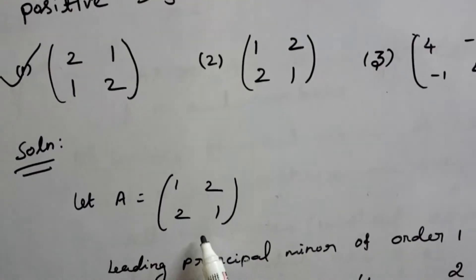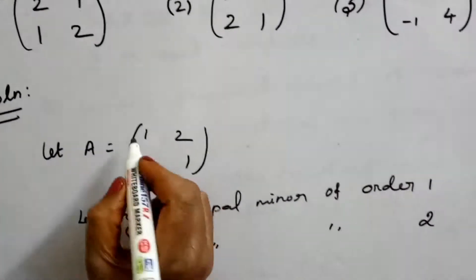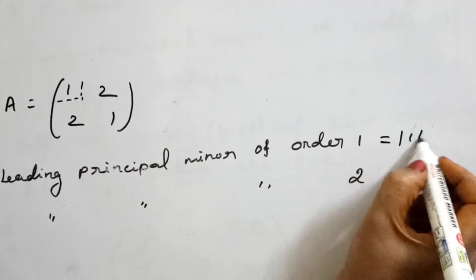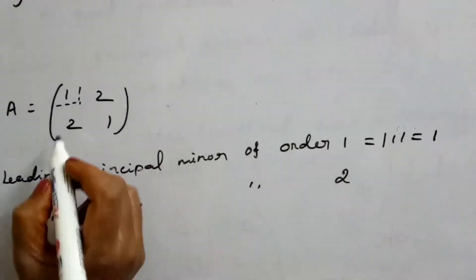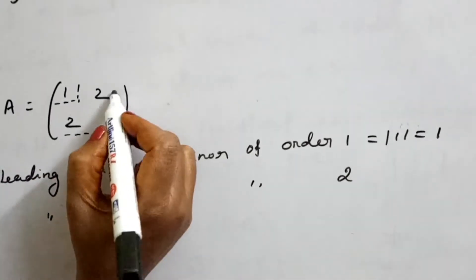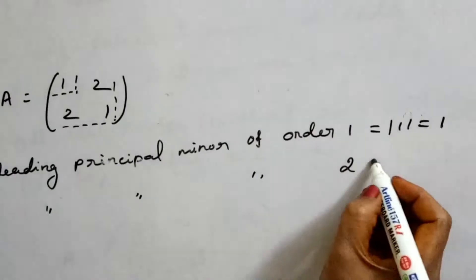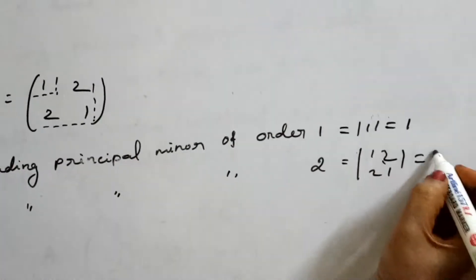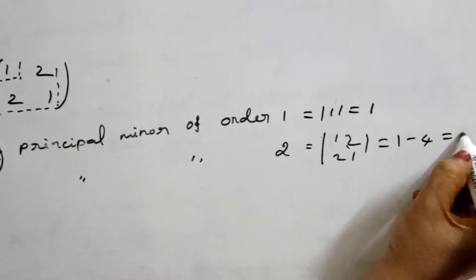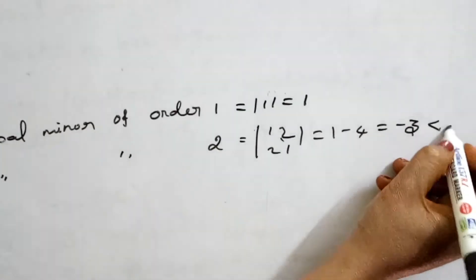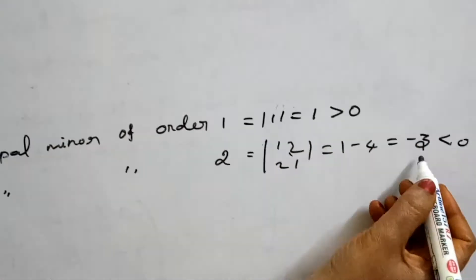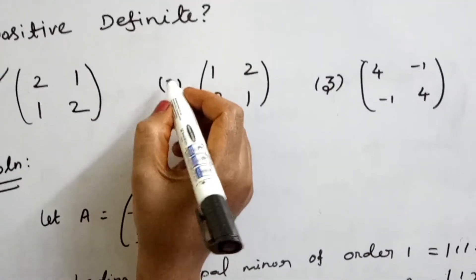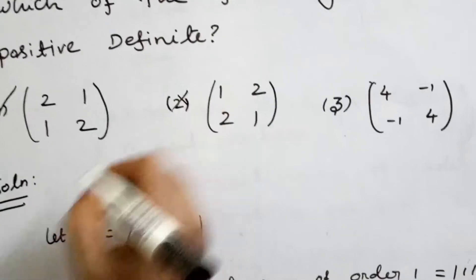Now for the second option: this is also a symmetric matrix. The leading principal minor of order 1 = det([1]) = 1. The leading principal minor of order 2 = det([[1, 2], [2, 1]]) = 1 minus 4 = -3, which is less than 0. Since the second minor is less than 0, the given matrix is not a positive definite matrix.